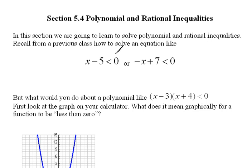What if we had an equation that looked like this? Or an inequality, I should say. x minus 5 is less than 0. Well, that means we would have to move our 5 over to the other side to get x is less than positive 5.